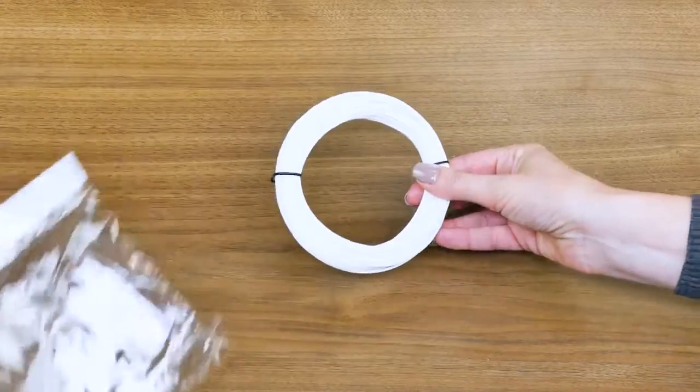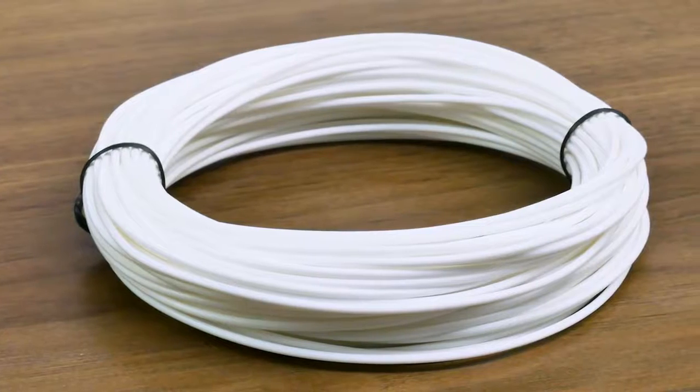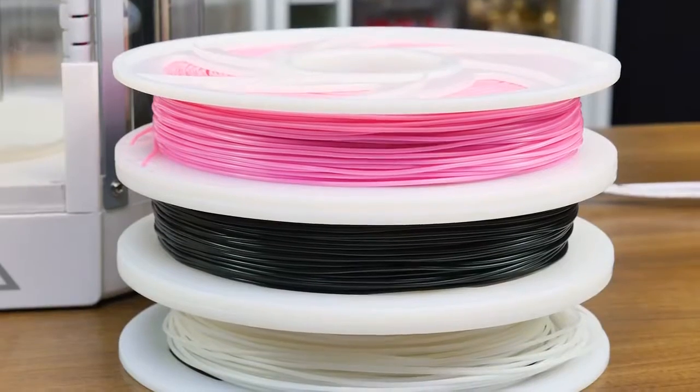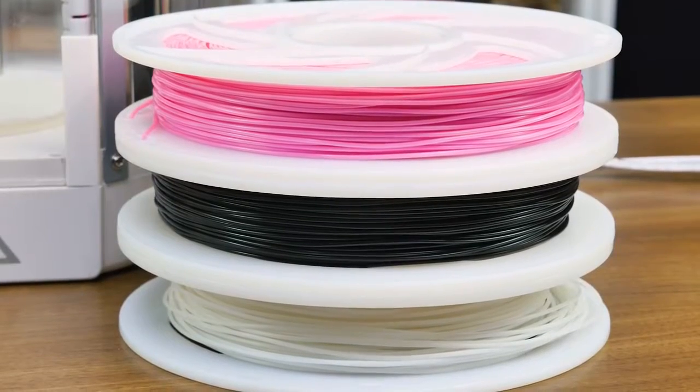Included with your machine is a loose roll of white filament that is approximately 60 grams in weight. Should you wish to purchase more filament, Silhouette sells spools with 500 grams of filament in a variety of colors.